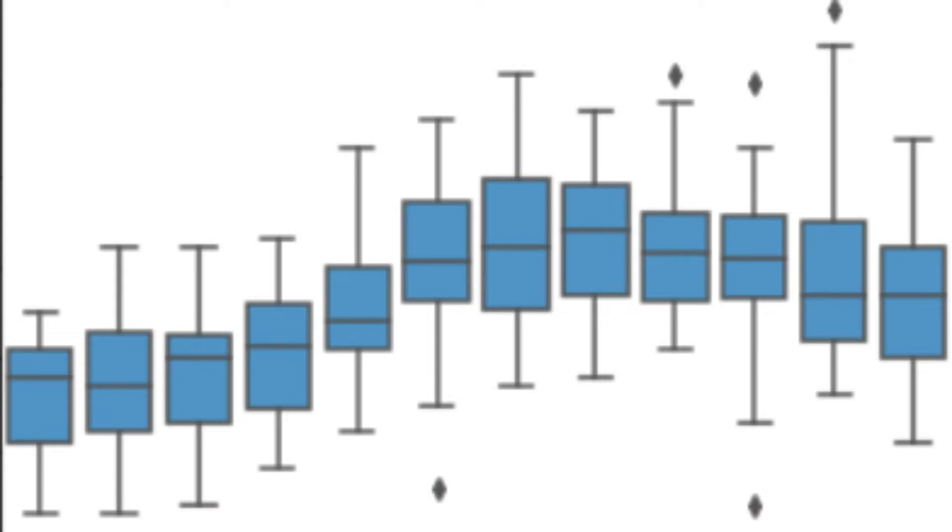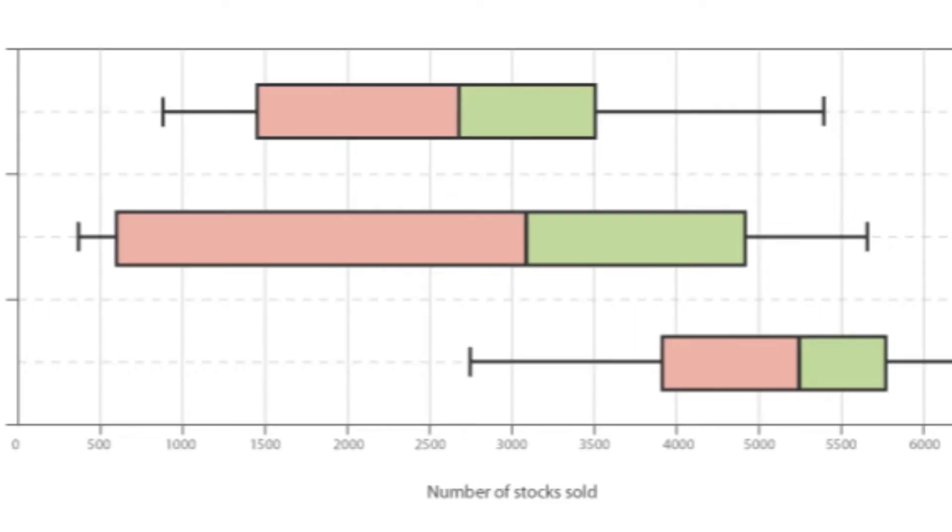One key thing to note is that box plots are used only for numerical variables — either discrete or continuous. Box plots cannot work with categorical variables. They can be plotted either vertically or horizontally; it has nothing to do with the story you're telling — it just comes down to preference.